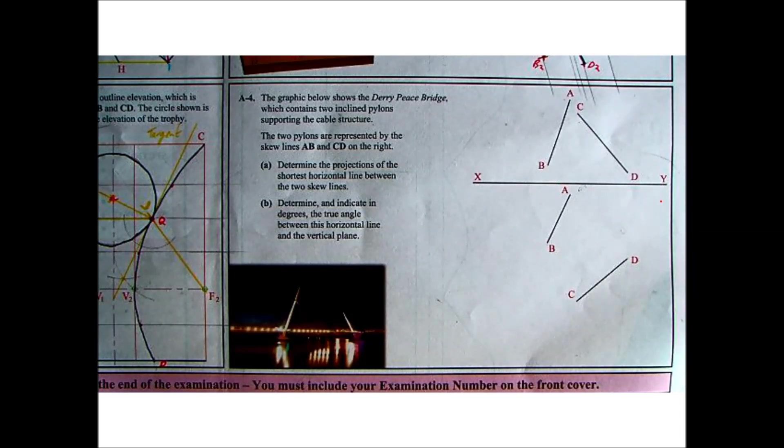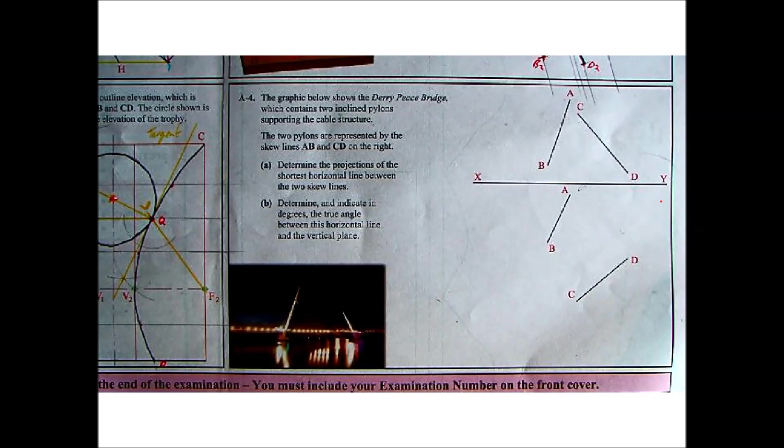The graphic below shows the Derry Peace Bridge which contains two inclined pylons supporting a cable structure. The two pylons are represented by the skew lines AB and CD on the right. Part A: Determine the projections of the shortest horizontal line between the two skew lines. Part B: Determine and indicate in degrees the true angle between this horizontal line and the vertical plane.